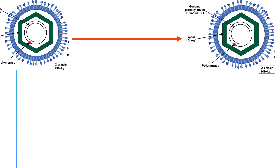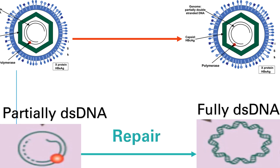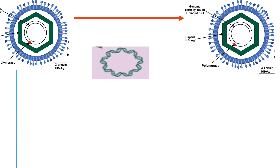So if we start out with partially double-stranded DNA, which is the genome of Hepatitis B, we should end up with partially double-stranded DNA. We start with a certain capsid protein and end up with the same capsid protein — it all has to be an exact copy. However, a partially double-stranded DNA cannot undergo transcription as-is; it needs to be repaired first into a fully double-stranded DNA by the viral DNA polymerase.